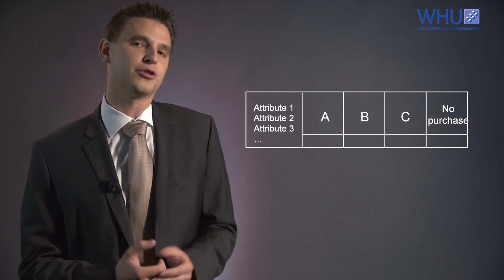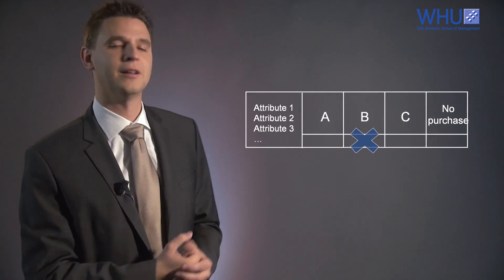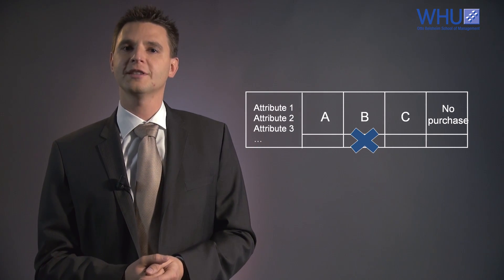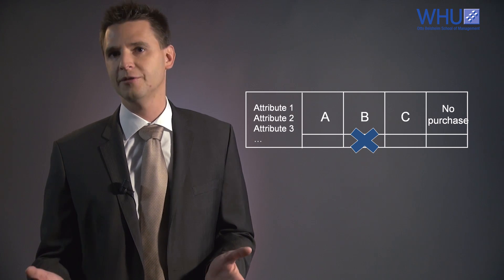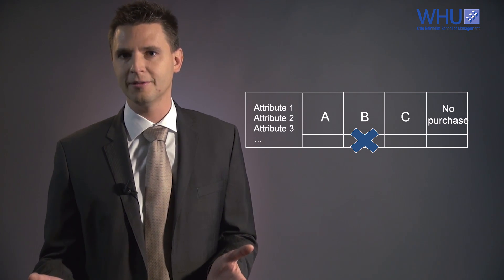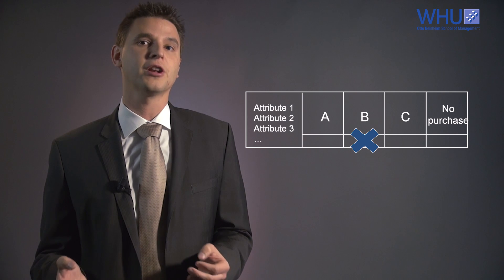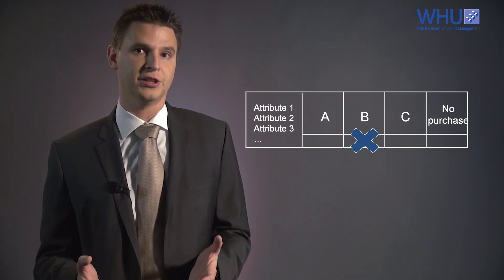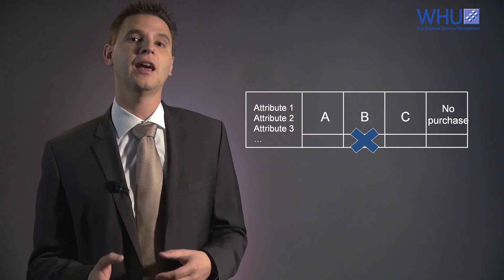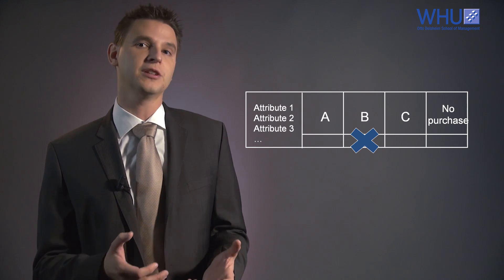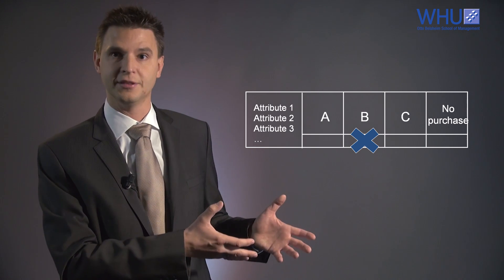So, if the respondent picks, for example, product B, we learn that product B provides sufficient utility to justify a purchase. We also learn that product B provides more utility than product A and product C, which is important information for the estimation of the attributes and the levels.